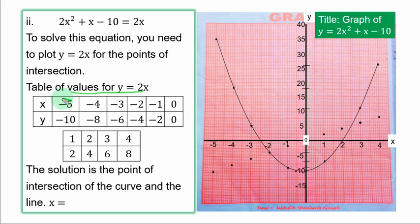When s is minus 5, y is minus 10. Minus 4 for s, minus 8 for y. Minus 3 for s, minus 6 for y. Minus 2 for s, minus 4 for y. Minus 1 for s, minus 2 for y. 0, 0, that is the origin. 1 for s, 2 for y. When s is 2, y is 4. When s is 3, y is 6. When s is 4, y is 8. You join all the points together.